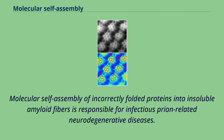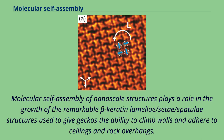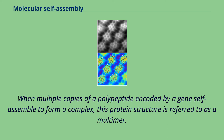Molecular self-assembly of incorrectly folded proteins into insoluble amyloid fibers is responsible for infectious prion-related neurodegenerative diseases. Molecular self-assembly of nanoscale structures plays a role in the growth of the remarkable beta-keratin lamella/seta/spatulae structures used to give geckos the ability to climb walls and adhere to ceilings and rock overhangs.